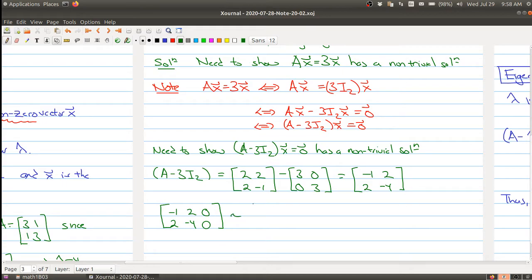Then this is row equivalent to [1, -2, 0; 0, 0, 0] and we actually see that x₂ is free.